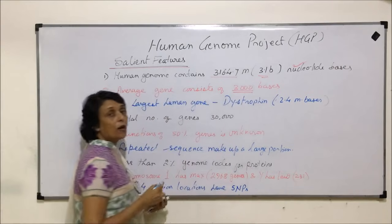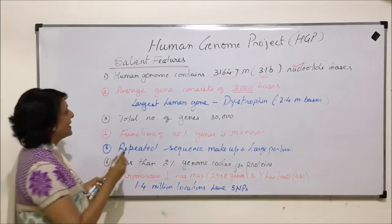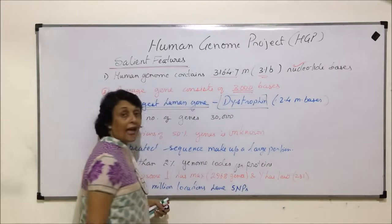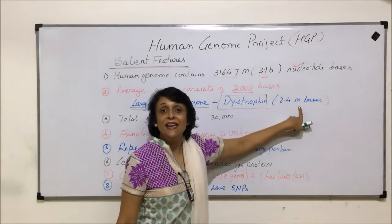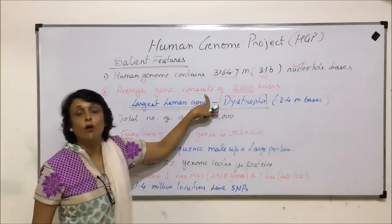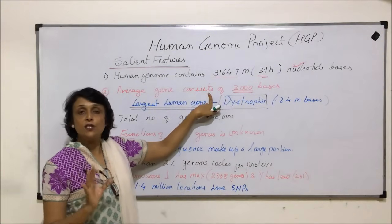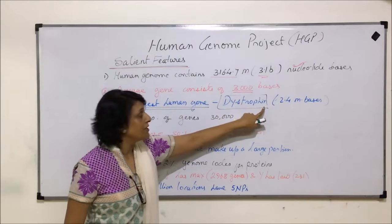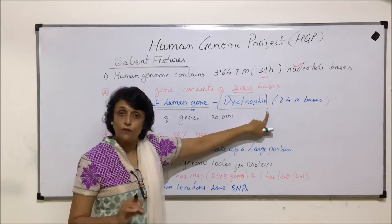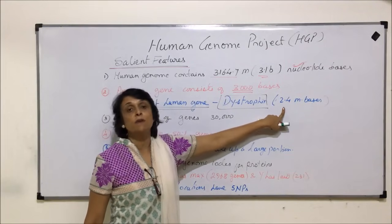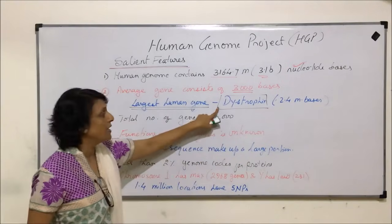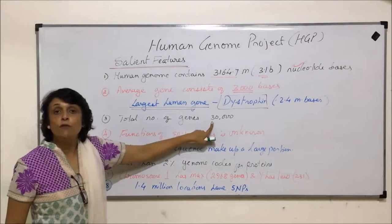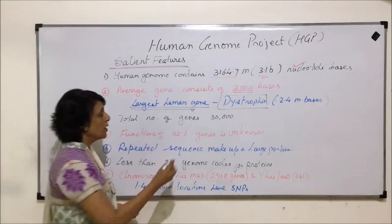The first salient feature: the human genome contains 3.164 billion nucleotide bases — different from the estimated number. The average gene contains about 3000 bases, but the largest human gene, the dystrophin gene, has 2.4 million bases.